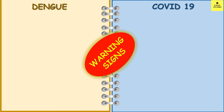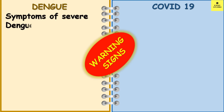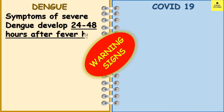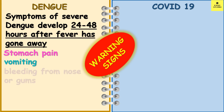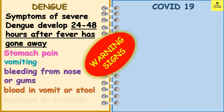There are some warning signs for COVID-19 and dengue. Symptoms of severe dengue begin 24 to 48 hours after the fever has gone away. They include stomach ache, vomiting, bleeding from the nose or gums, blood in vomit or stool, feeling tired, and restlessness or irritability. If anyone develops these symptoms, please seek medical help as soon as possible.